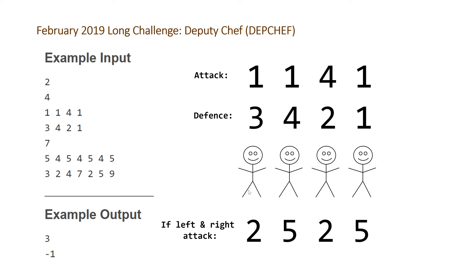If we calculate the combined attacks for each soldier's neighbors, for the first soldier the person on the right has attack 1 and the person on the left — the soldier at the end of the array — also has attack 1, so the combined attack is 2. For the second soldier, attack on the left is 1 and attack on the right is 4, so combined attack is 5, and we continue to get 2 and 5. Comparing these to the defenses, the first individual has a defense of 3 and a maximum combined attack of 2, so that's our answer.